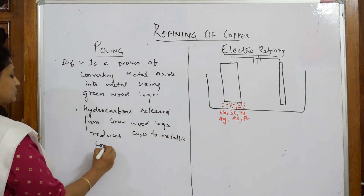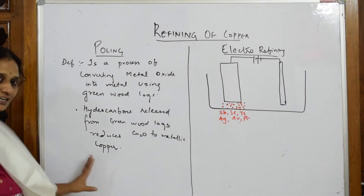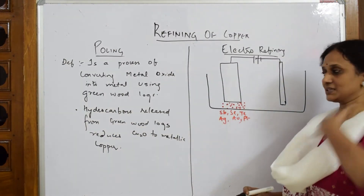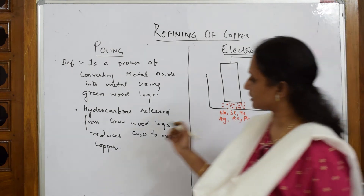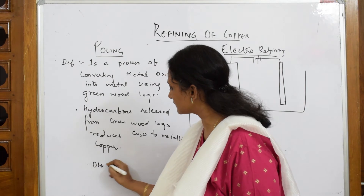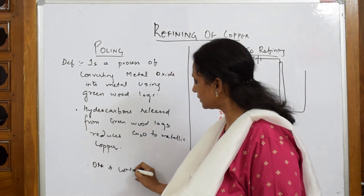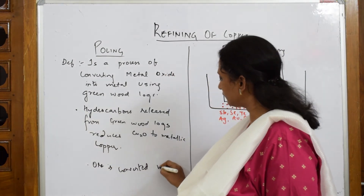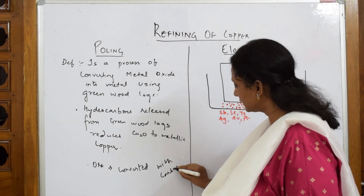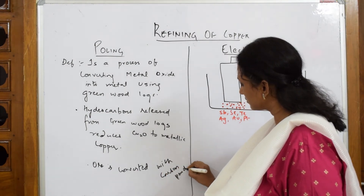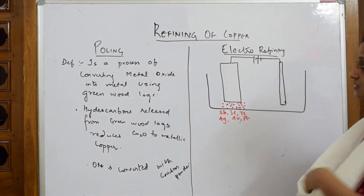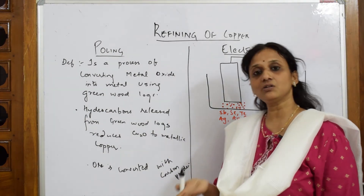When writing in the exam, write the definition and note that hydrocarbons are released from green wood logs and reduce copper oxide to metallic copper. You can also write that the ore is covered with carbon powder, which also acts as a reducing agent. This is your polling process — it is called polling because the metal is placed on wooden logs or poles.